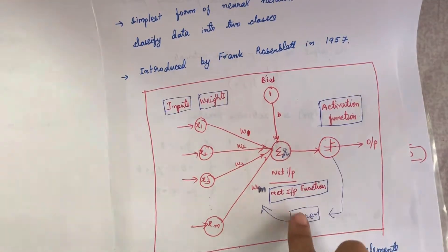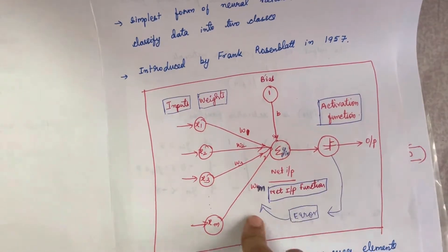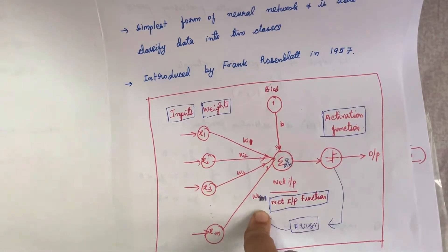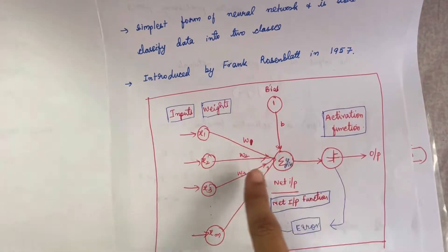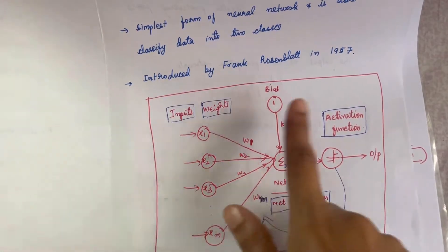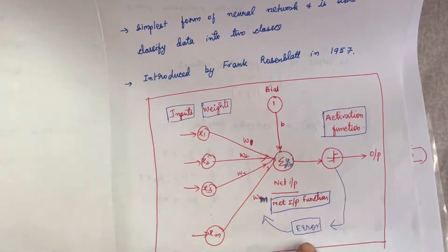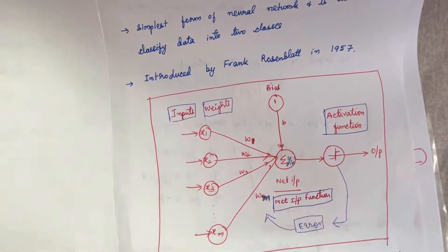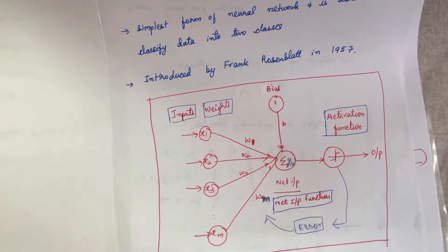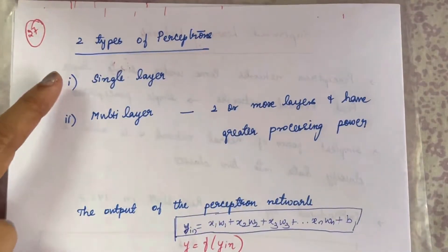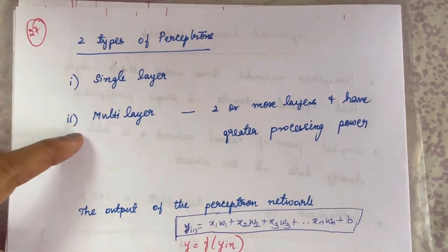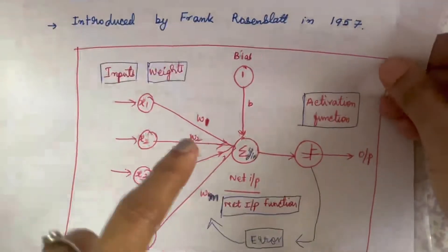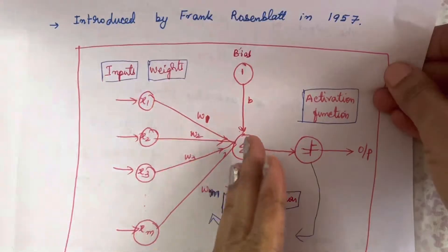Since this is a supervised learning model, both the inputs and the target values are given. The output values received from the network are compared with the target values. When you compare, if there is any error, you have to train the network again by changing the weight values and repeating the same process, until there is no error. There are two types of perceptron: single layer perceptron and multi-layer perceptron. Single layer perceptron is the architecture we have seen, with only one layer.